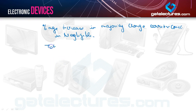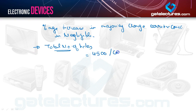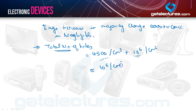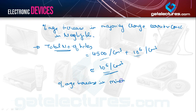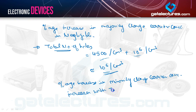For holes (minority carriers), total hole concentration becomes 4500 + 10^6 per cm³. We cannot neglect 10^6 here since it is much larger than 4500, so the total is approximately 10^6 per cm³. Thus the percentage increase in minority charge carrier concentration is very high — minority carrier concentration increases significantly with temperature.